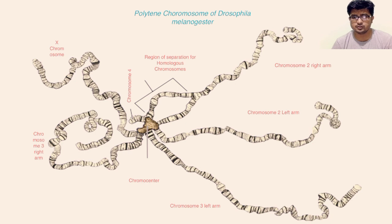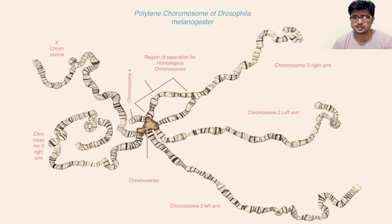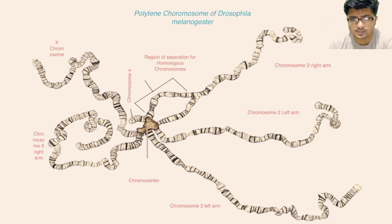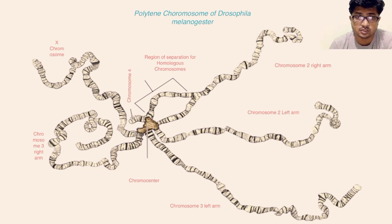Polytene chromosomes can be observed in Drosophila salivary glands as well as some dipterans and other fruit flies. These giant chromosomes are observed at a certain stage of their life cycle — they are very stage-specific or tissue-specific. The salivary glands need specific requirements during their developmental stage, and at that time they form this kind of huge chromosome named as polytene chromosomes.